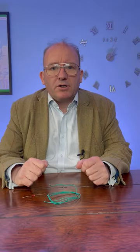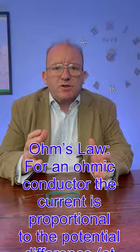What is an ohmic conductor and what is resistance? Ohm's law tells us that for an ohmic conductor, the current through it is proportional to the potential difference across it, provided the temperature remains constant.